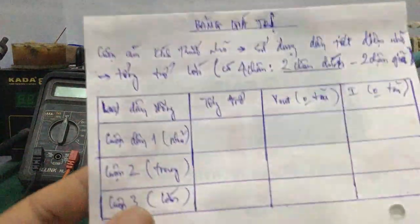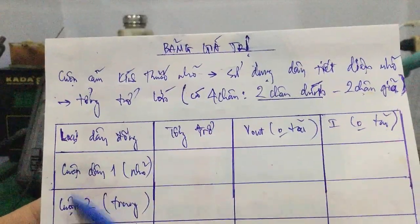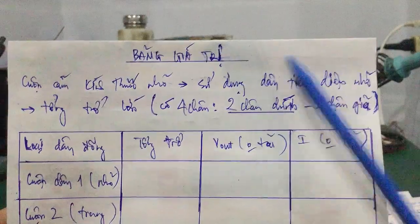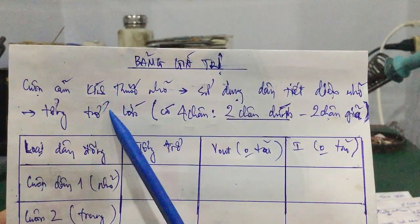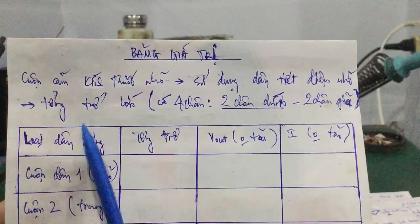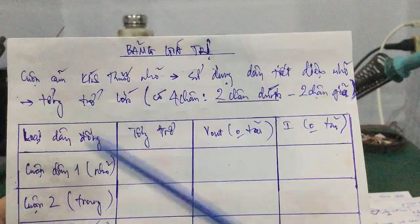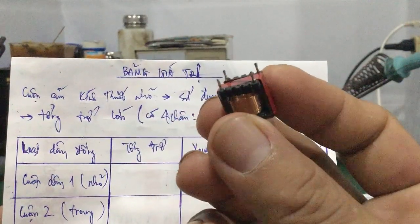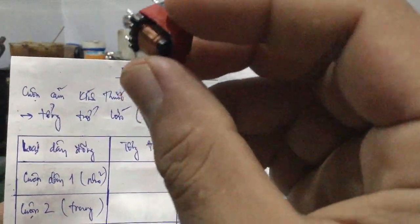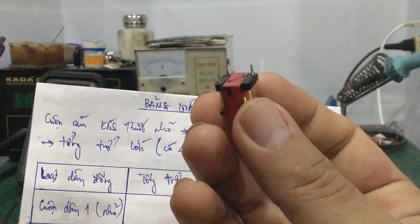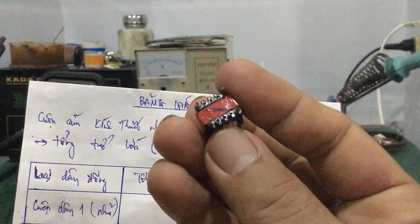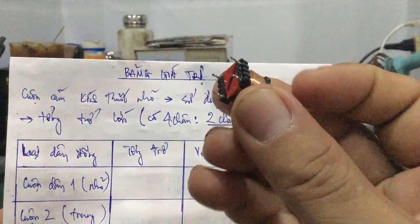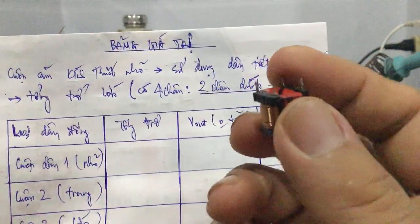Mình lập một bảng giá trị. Cuộn cảm kích thước nhỏ thì bên trong sử dụng dây tiết diện nhỏ, số vòng dây nhiều hơn, tổng trở lớn hơn. Cuộn cảm của mình có 4 chân - hình dáng cấu tạo các bạn liên tưởng đến một biến áp xung, nhưng thật ra không phải, chính xác là cuộn dây thôi. Trong đó có 2 chân chính và 2 chân phụ dùng để giữ cố định - 2 chân phụ là chân giả, thực chất chỉ có 2 chân thôi.